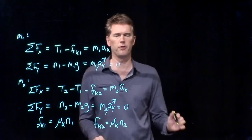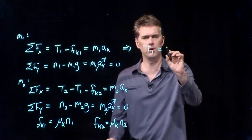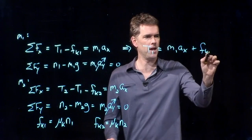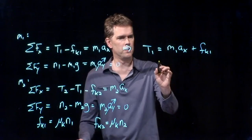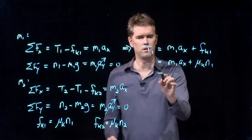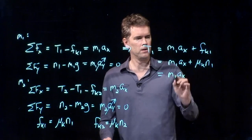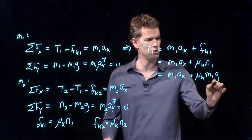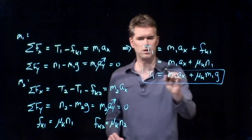If we're looking for tension T1, we can start with this very first equation. And we can write T1 is equal to M1 A sub x plus FK1. What is FK1? FK1 is equal to mu K N1 from our last equation. But from this equation, we know that N1 is just M1 G. So this is the tension T1.